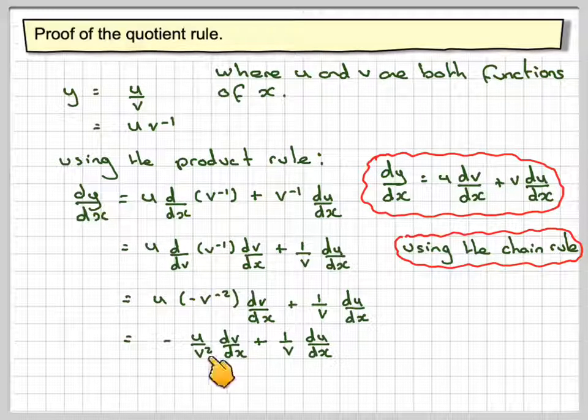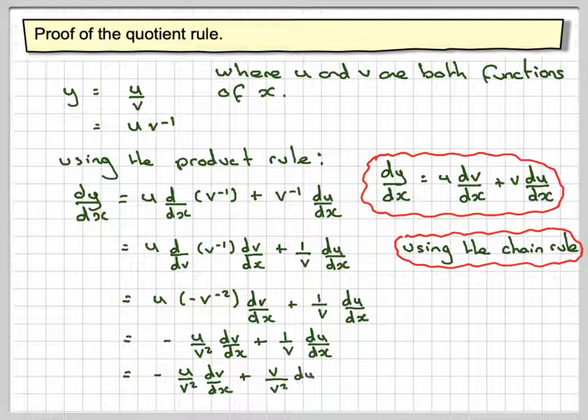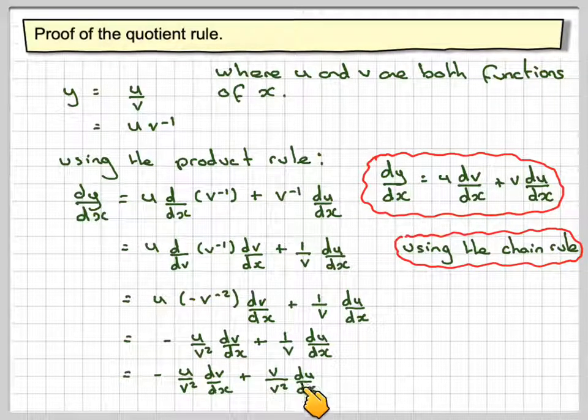A common denominator would be v squared, so that means I need to multiply that by v and that by v. So we get minus u over v squared dv by dx, plus v over v squared du by dx.